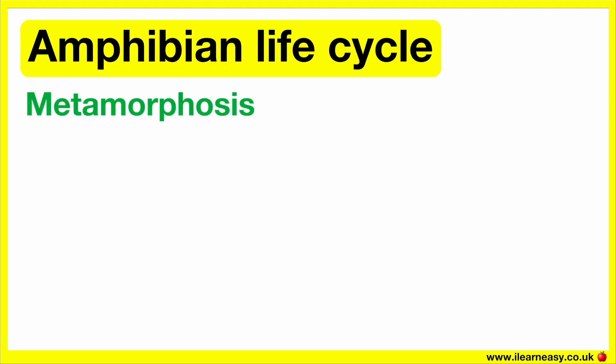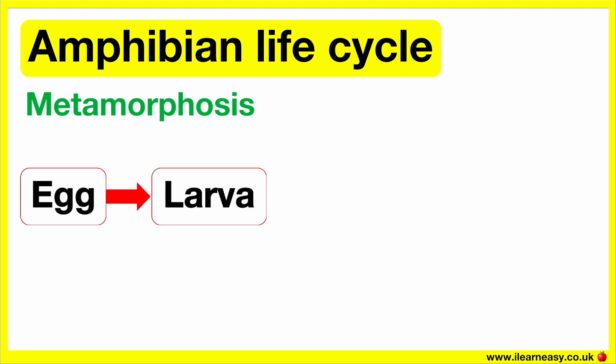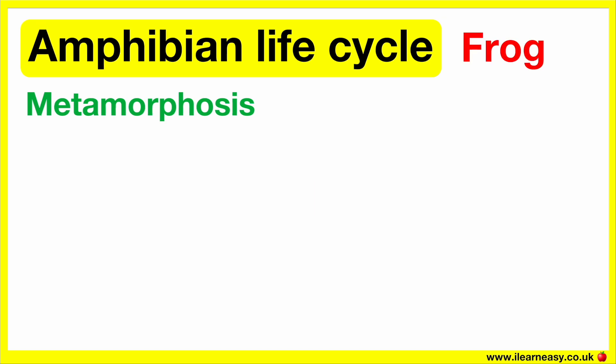The life cycle of an amphibian that goes through metamorphosis consists of three main stages: egg, larva, and adult. The life cycle of a frog is an example of metamorphosis.